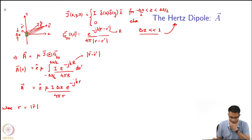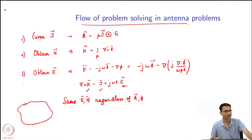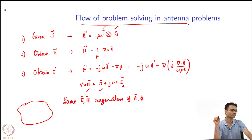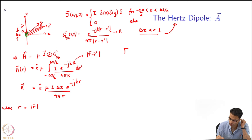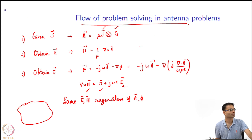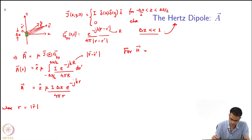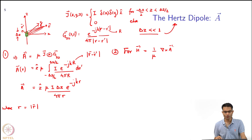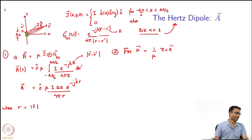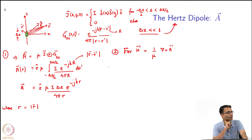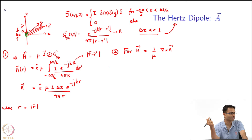The next step is to find H. We have J, we computed G, and calculated A. The next step is to calculate H using H = (1/μ) curl of A. We should use our coordinate system to our advantage — spherical coordinates are what you want here. Writing r as sqrt(x² + y² + z²) and doing it in Cartesian would be a lot more work.